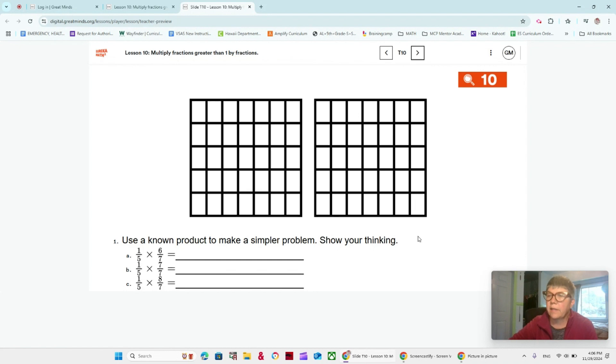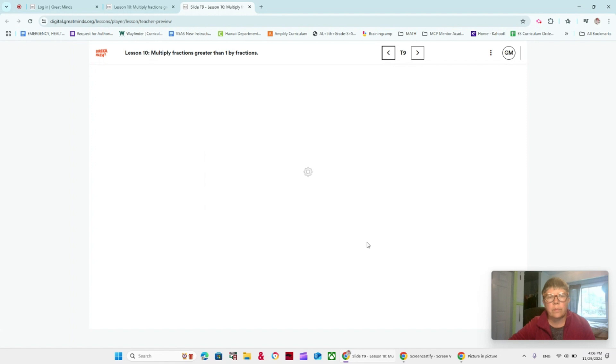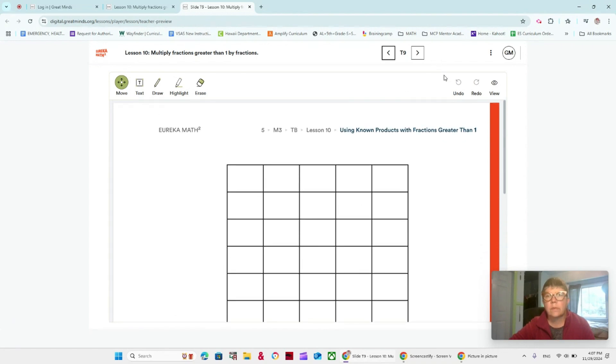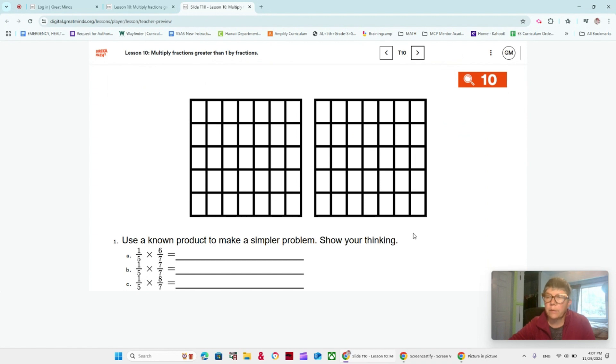One in your book. Use the known product to make a simpler problem and show your thinking. Let's work on these together. Look at the area model that you have in your whiteboard and think about what you notice there. Hopefully you notice that you have two squares and they're all broken into sevenths vertically and fifths horizontally. When we say sevenths vertically, we mean we have six lines going up and down, which makes seven pieces. And horizontally, we mean we have five rows going this way, four lines.